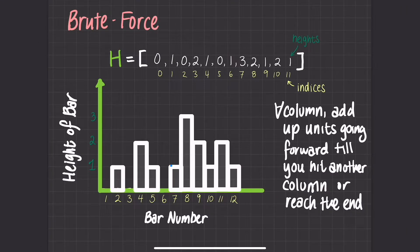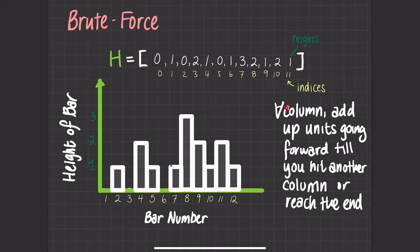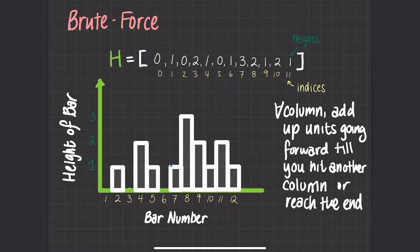Now that we understand what the problem is asking, let's go over what the brute force solution might look like, examine its limitations, and see if we can make observations to reach a more efficient final solution. A brute force solution would work as follows: at every single column, we keep going forward, adding up every single unit difference between its current height and the next column over, until we hit another column that is equal to or greater than the current column's height, or we reach the end.